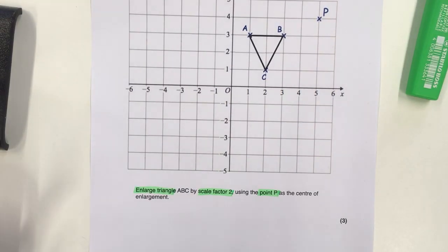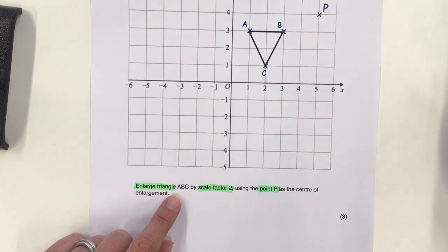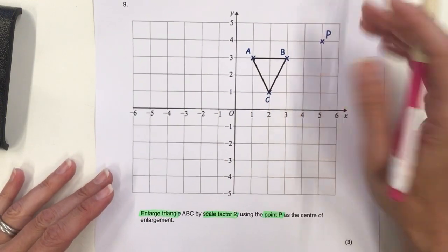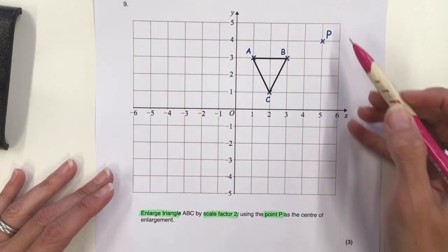This video is going to look at how to enlarge a shape by a scale factor. We have a triangle in this question and we are going to enlarge it by a scale factor of 2 from point P.